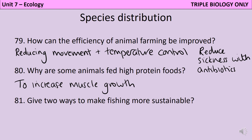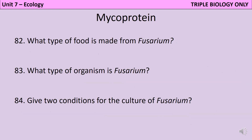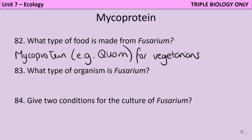Fishing can be made more sustainable both by controlling the size of the holes in the nets and also by introducing fish quotas. Fusarium is used to make mycoprotein, which is the basis of lots of vegetarian foods. Fusarium is a type of fungus, and in order to culture it, it needs warm aerobic conditions — it's provided with a source of oxygen and fed glucose syrup as an energy source.